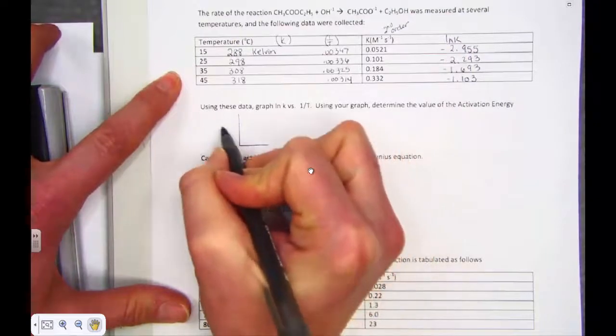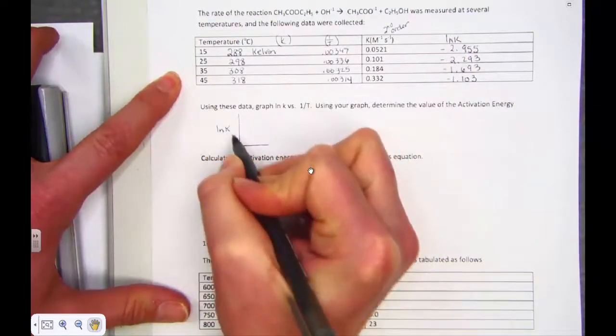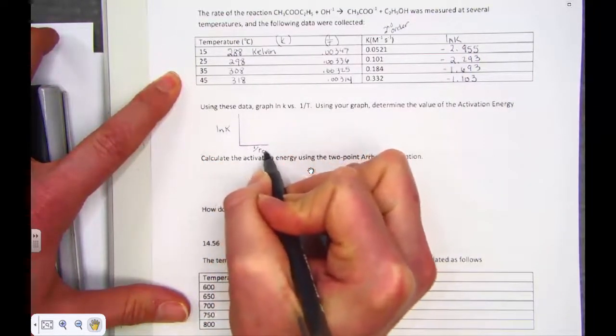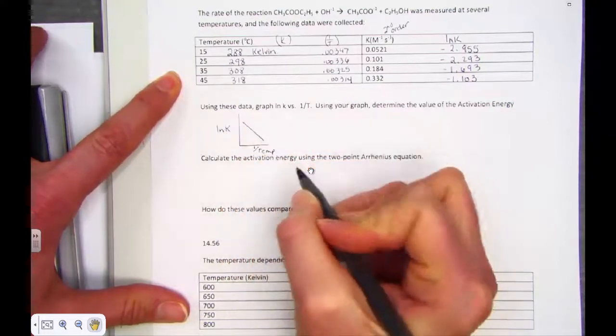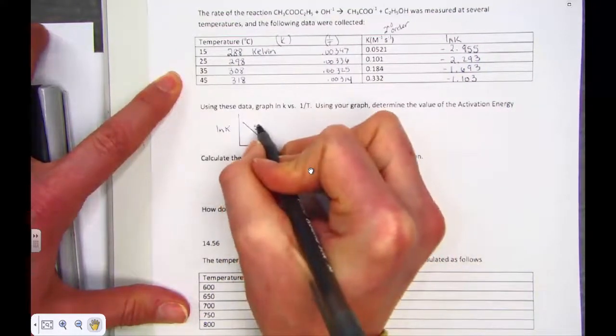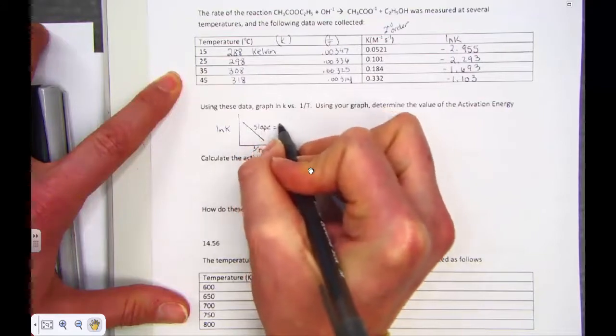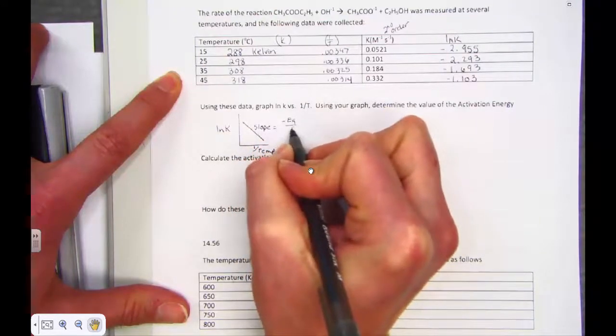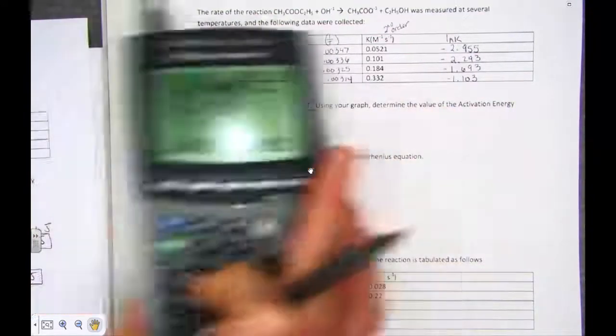So again, just remind ourselves what we're graphing. The natural log of K, reciprocal of the Kelvin temperatures. We're going to run a diagnostics of a straight line, where the slope is negative Ea over R. So let's go to work doing that.